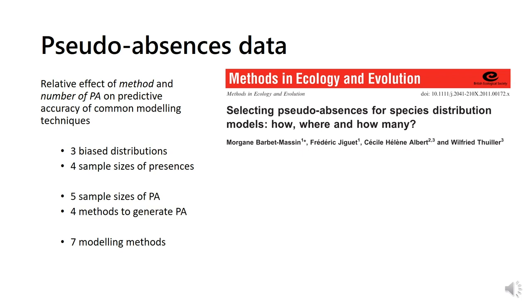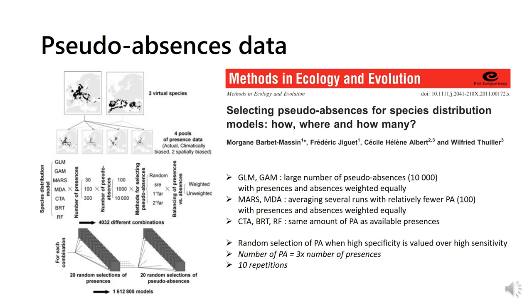For each dataset, they used four different methods to generate pseudo-absences, one random, one surface range envelope, and two disks, and five sample sizes, and used these different datasets obtained with each of seven modeling techniques, through regression, to classification, and to machine learning.